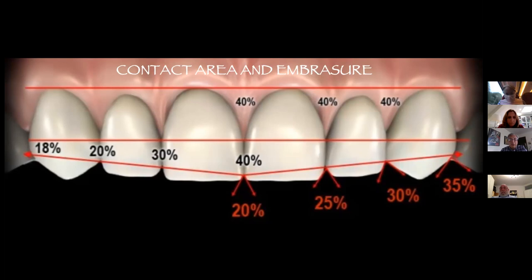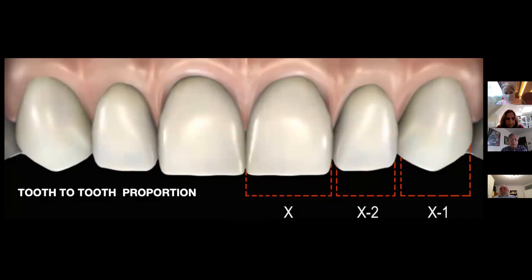If you're dealing with implants — a combination of implants and veneers — it might change that quotient, and the patient has to be aware of that before you start. If they have a high smile line, this could be problematic. I want to look at tooth proportion: X is the width of the central, X minus 2 is the width of the lateral incisor, X minus 1 is the width of the canine — that's how you determine proper width.